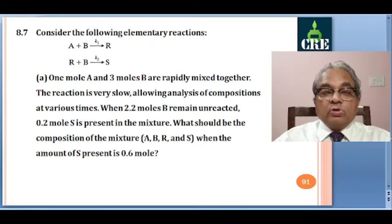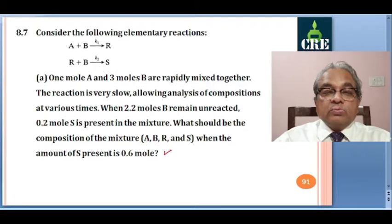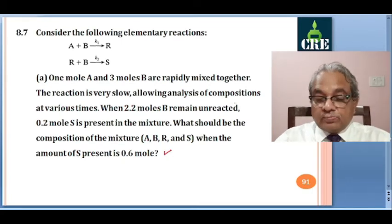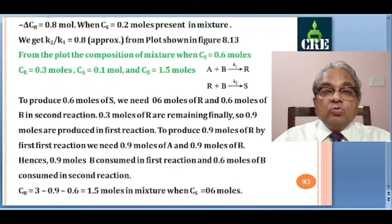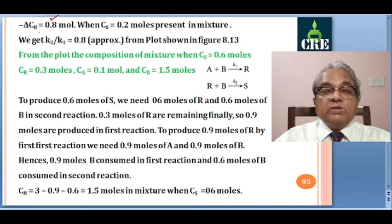What should be the composition of the mixture of A, B, R, or S when the amount of S present is 0.6 moles? With 3 moles initially and 2.2 remaining unreacted, 0.8 moles of B is consumed. So delta CB is 0.8 and delta CB by CA0 equals 0.8, since CA0 is 1 mole. CS is present in the mixture.